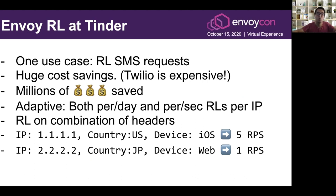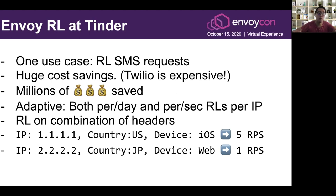One use case at Tinder is SMS request rate-limiting. We have a lot of bots requesting a lot of SMS codes, which is very expensive because Twilio — our third-party SMS provider — is expensive. Initially we had this rate-limiting built into our application, but it was brittle and hard to update; every time you wanted to add a new rate-limit, you'd have to write additional code. We migrated all of it to Envoy, which resulted in millions of dollars in savings.